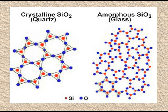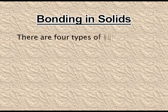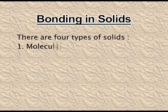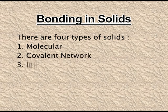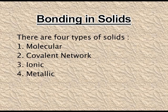Depending upon the nature of the bonding, crystalline solids are further classified. There are four types: molecular, covalent network, ionic, and metallic — all classified depending upon the nature of the bonding.